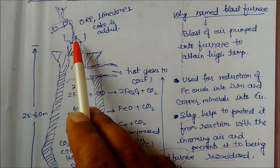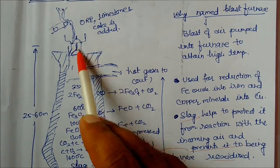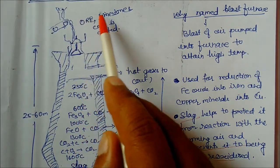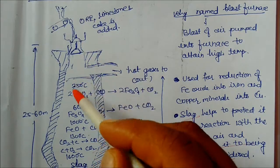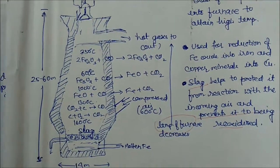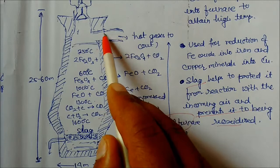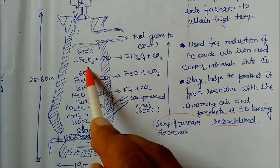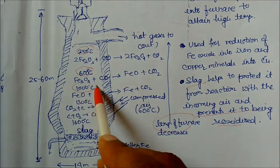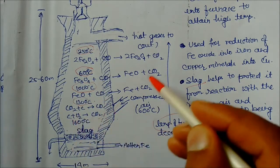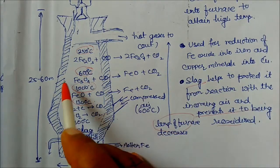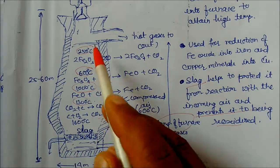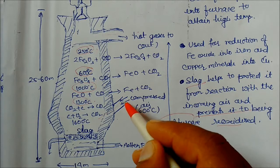Next is the diagram of the blast furnace. The top portion has a hopper cone where the charge — ore and limestone — is added and moves downward. The furnace is 25 to 60 meters in height and shows different temperature zones increasing from top to bottom, with hot air supplied from outside.